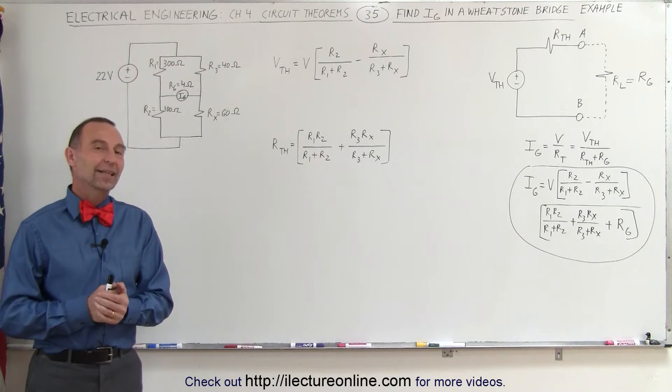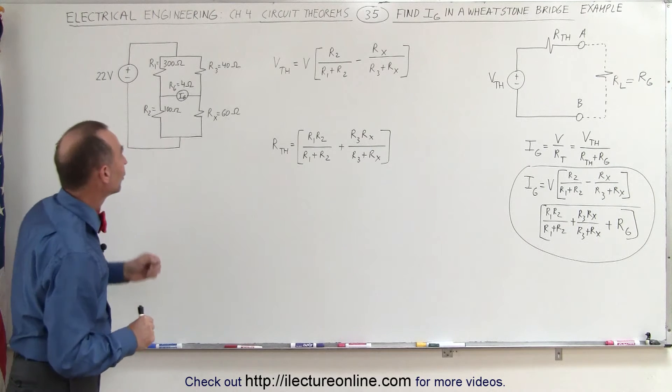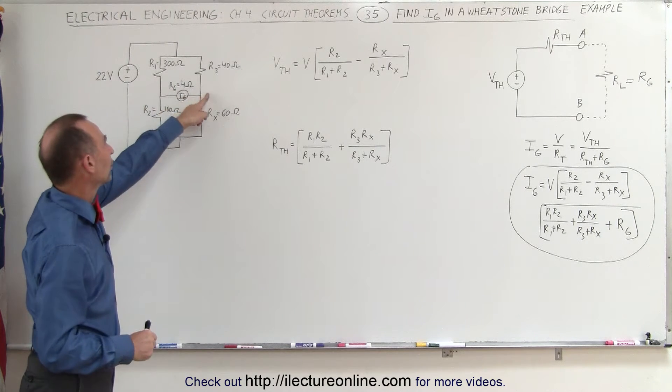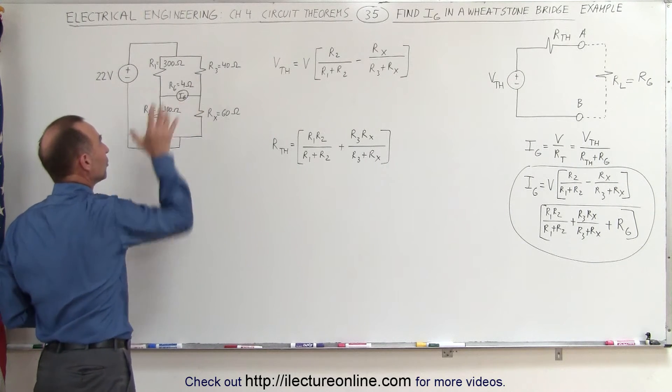Welcome to ElectronLine. In this video we're going to show you the example of how to actually calculate the current from point 1 to point 2 across the Wheatstone Bridge. The current through the galvanometer between these two points.